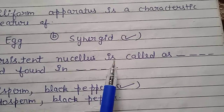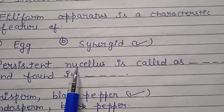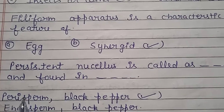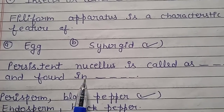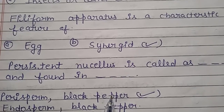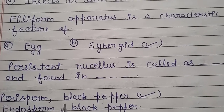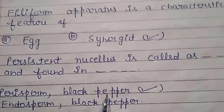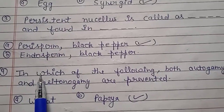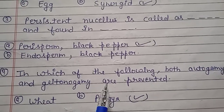Question number 3: persistent nucellus is called as and found in what? The persistent nucellus is called perisperm. Question number 4: in which plant are both autogamy and xenogamy prevented?